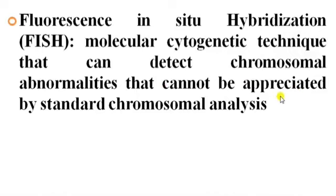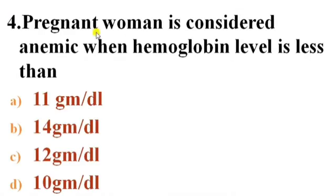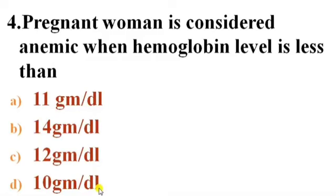Next question: A pregnant woman is considered anemic when hemoglobin level is less than — Options: A) 11 g/dL, B) 14 g/dL, C) 12 g/dL, D) 10 g/dL. Answer is D — 10 gram per deciliter. A pregnant woman is considered anemic when hemoglobin level is less than 10 g/dL.